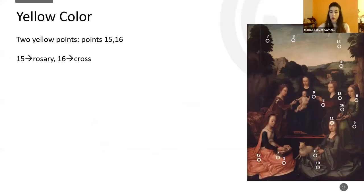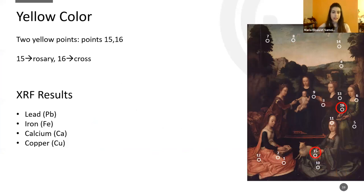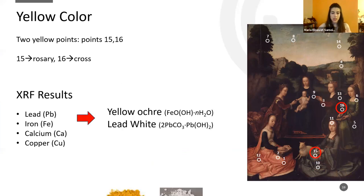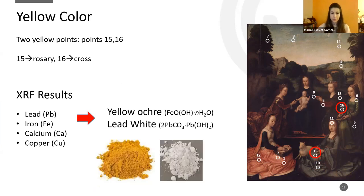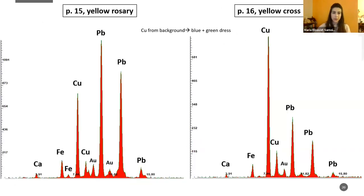For the yellow color, we took two points. The results were again lead, iron, calcium, and copper — with the copper corresponding to the background of the dresses, the blue and green. So we have yellow ochre and lead white for the yellow color. The spectra show the lead for lead white, and iron and calcium for the ochre.